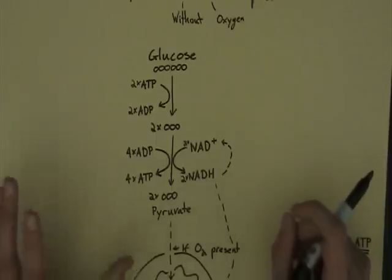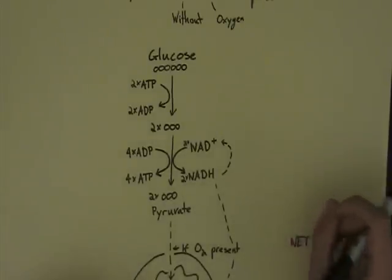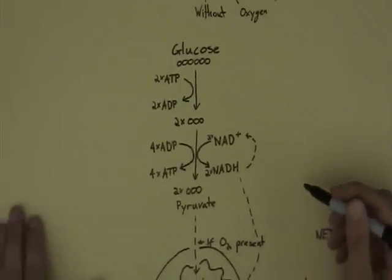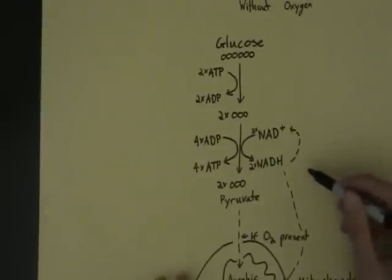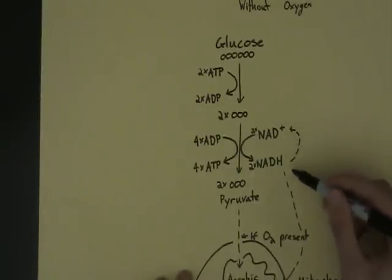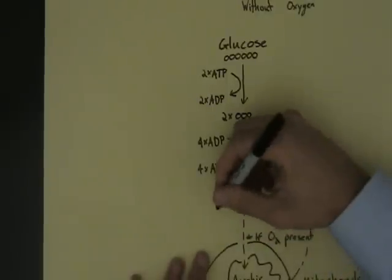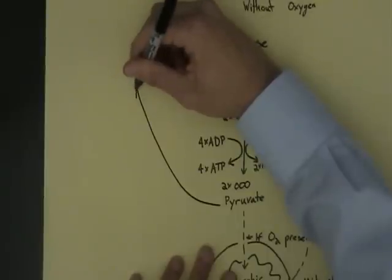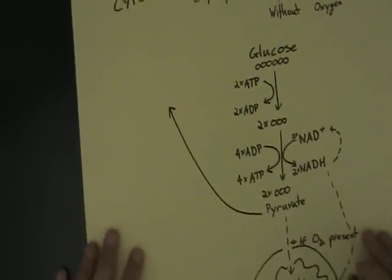Animals and some bacteria have got a different strategy to plants and fungi. We're going to talk about animals first. This is what they do to carry out this step here. They convert pyruvate into a different substance called lactate.